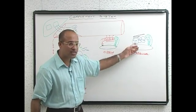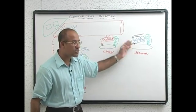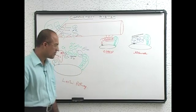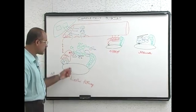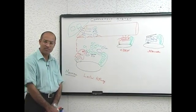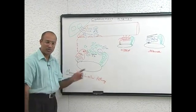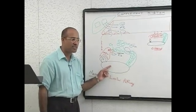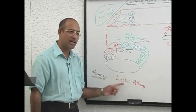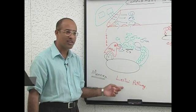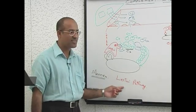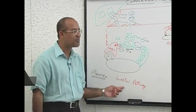Just some proteins on the surface and the complement system is activated. Antibodies are not involved. So when bacteria come into your body, this pathway is activated early — because we do not need antibodies. Antibodies take time to build up.